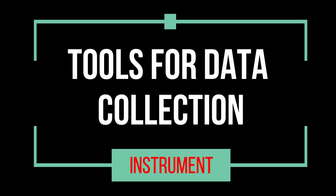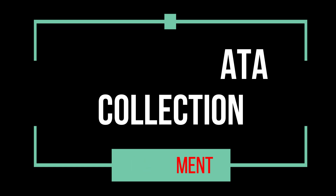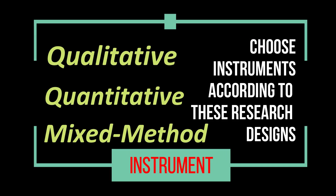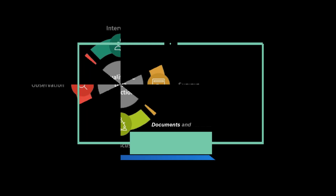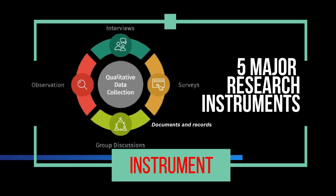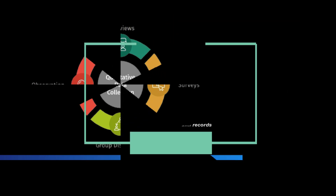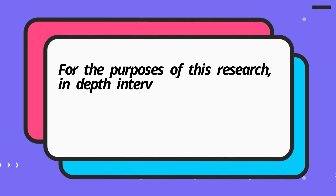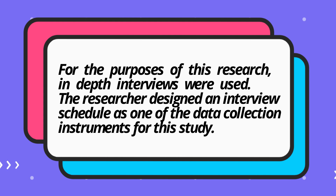Next in line is the research instrument. A research instrument is a tool used to obtain, measure, and analyze data from subjects around the research topic. You need to decide the instrument to use based on the research design you have chosen — quantitative, qualitative, or mixed method. There are five major research instruments: observation, interview, survey, focus groups, and documents and records. Look at the first paragraph sample for this part; for the succeeding paragraphs you may define the chosen instrument.